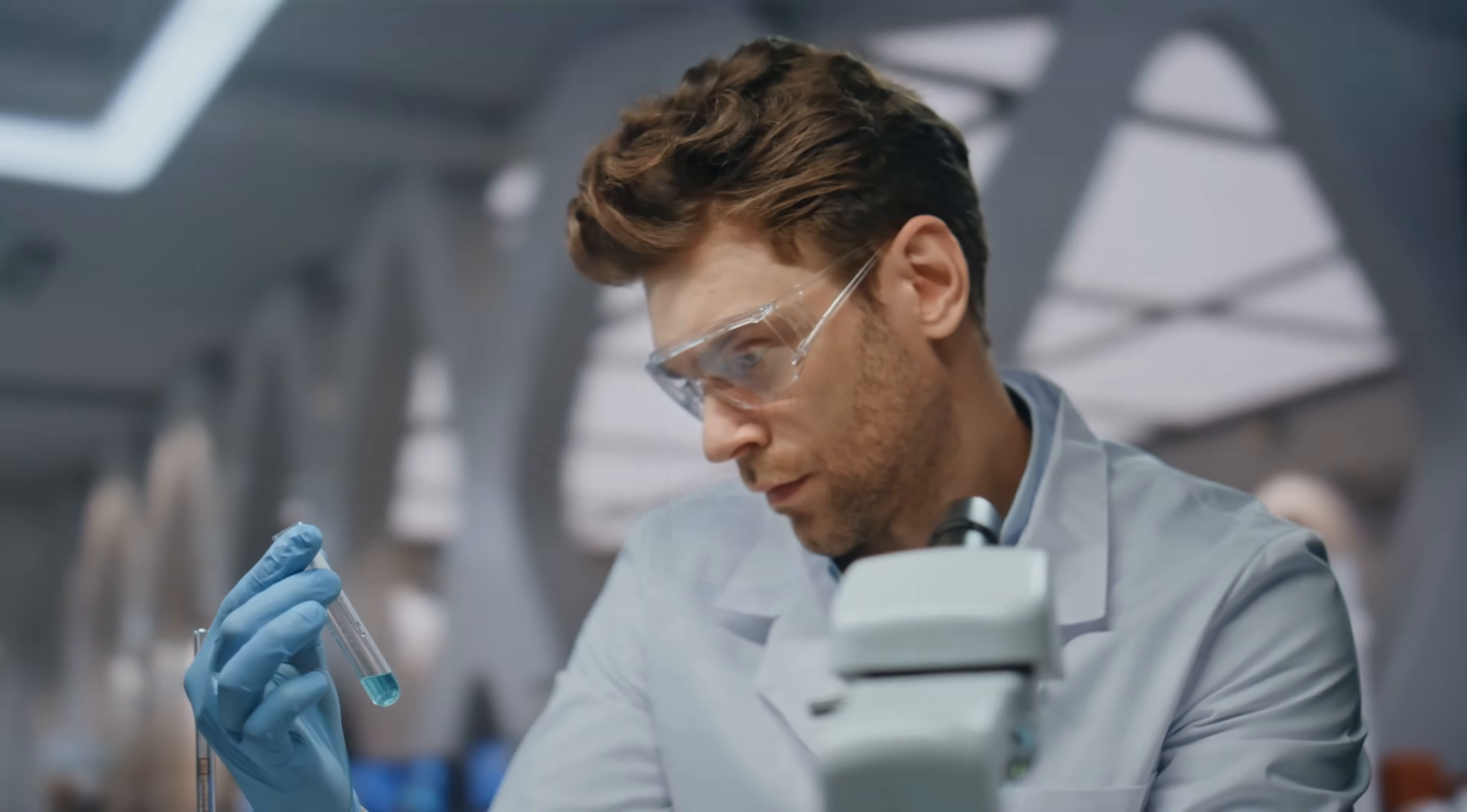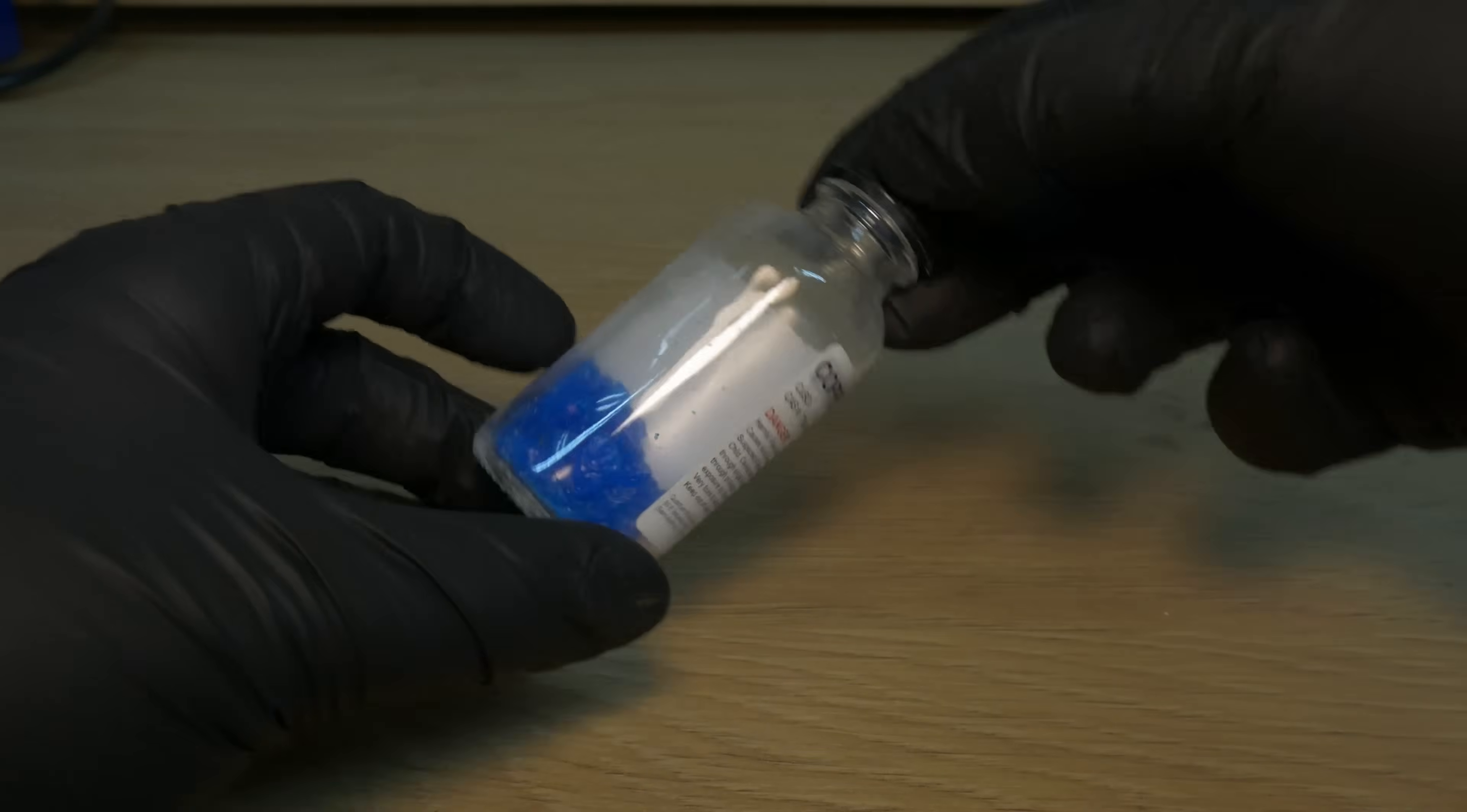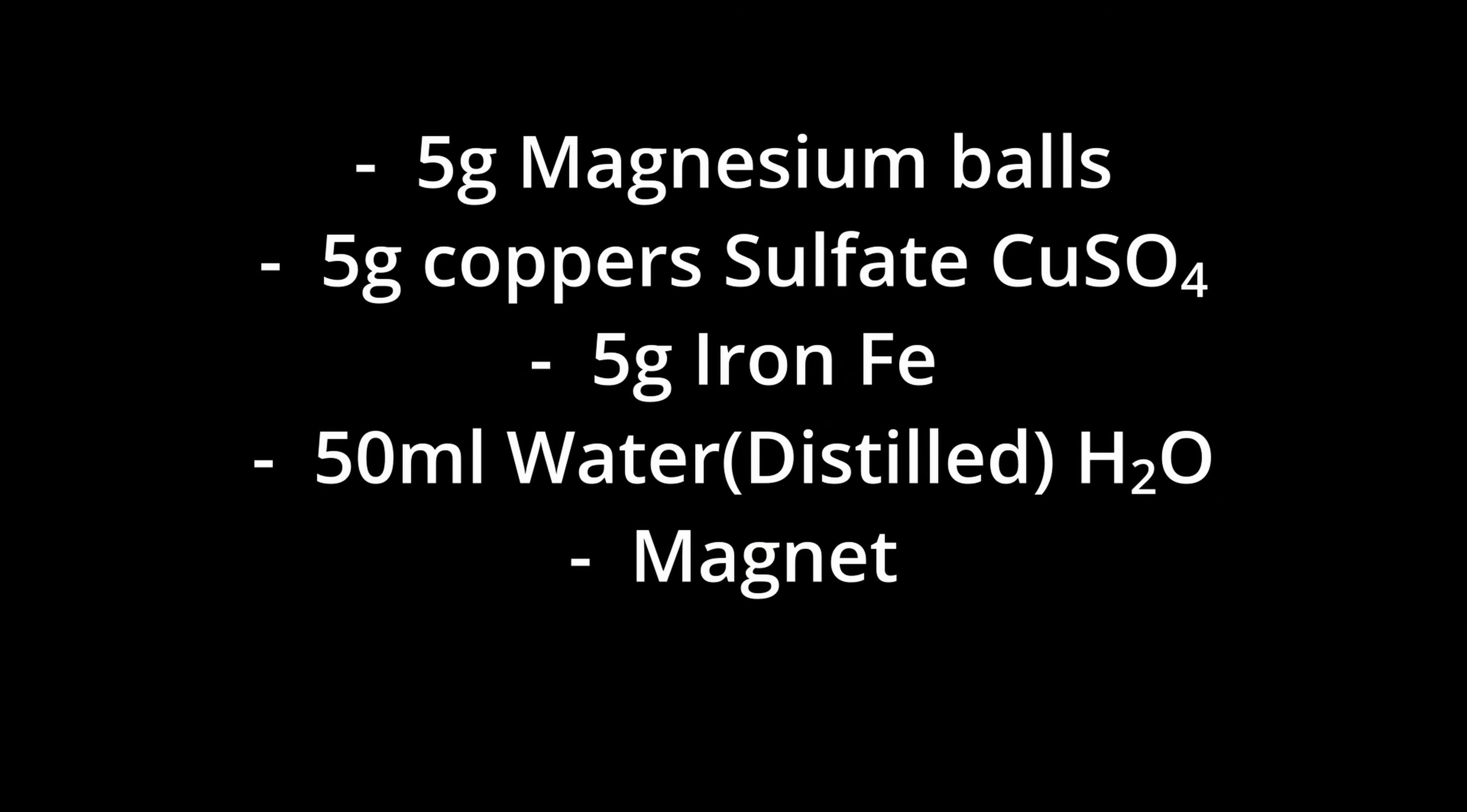Safety first. We're using iron sulfate, which is relatively safe, but you don't want to eat it or get it in your eyes. Gloves, goggles, and maybe an adult supervising if you're a kid trying to do this at home. Let's do this step by step. For this experiment, we would need 5 grams of magnesium balls, 5 grams of copper sulfate, 5 grams of iron, 50 milliliters of distilled water, and a magnet.